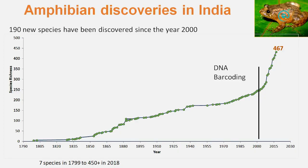So what changed in all these years? What changed from the year 2000 till now? The answer is DNA barcoding. In the year 2003, this technique came into picture and it really revolutionized the species descriptions of amphibians.